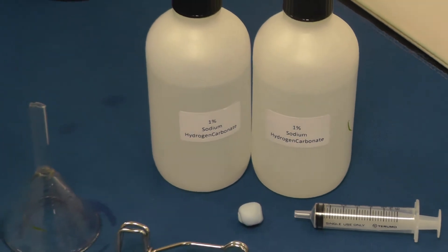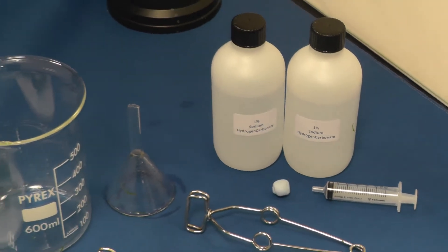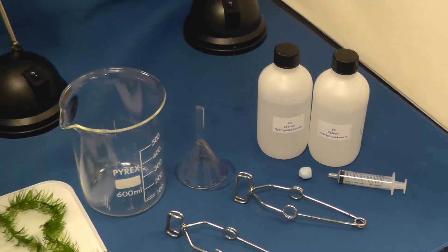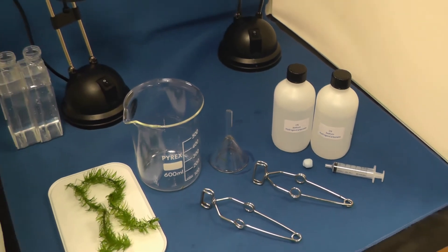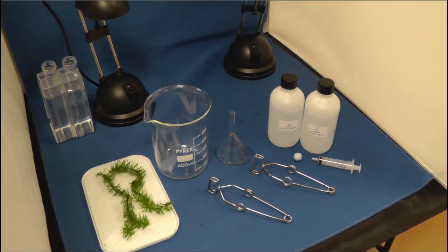To set up a bubbler you will require sodium hydrogen carbonate solution, a beaker and glass funnel, something in which to collect the oxygen gas. A syringe barrel capped with blue tack is good for this, a light source, and a couple of sprigs of the plant.